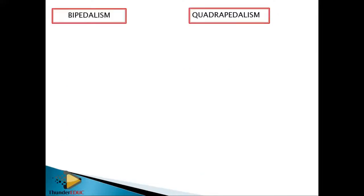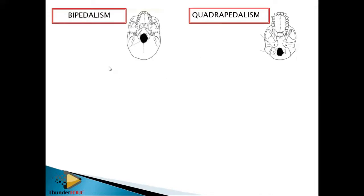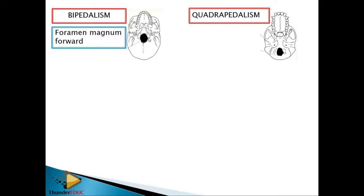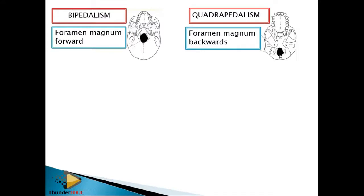Let's look at the difference between bipedalism and quadrupedalism. If you are walking on two limbs, the foramen magnum is in a forward position — the distance from the front shifts forward. Whereas in quadrupedalism, the foramen magnum is backward — the distance is very small toward the back. We say 'backward,' not 'behind' — use the correct terminology so the examiner awards you a tick.